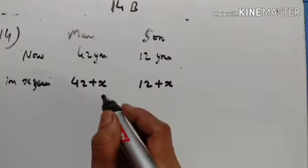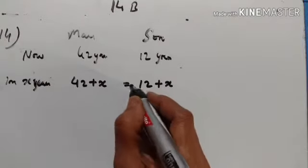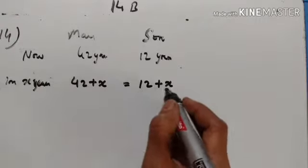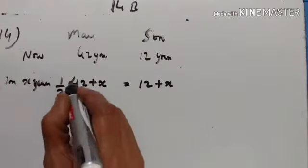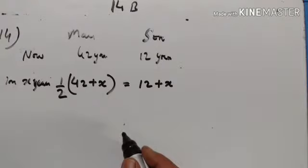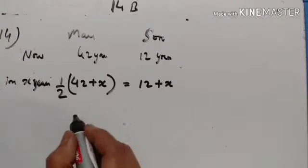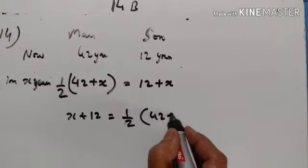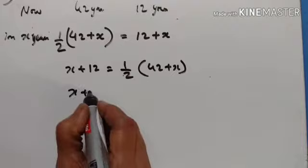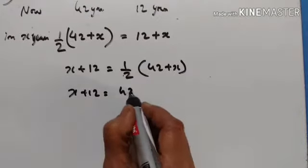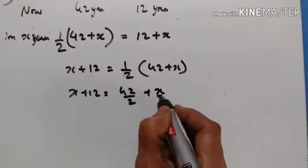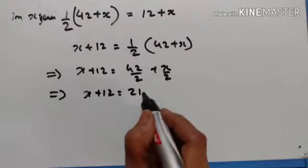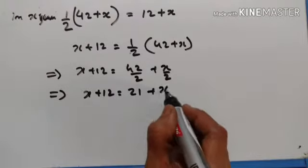In how many years will the age of the son be half the age of the man? In x years, x plus 12 is equal to half of 42 plus x. So x plus 12 is equal to 42 over 2 plus x over 2, which gives x plus 12 is equal to 21 plus x over 2.